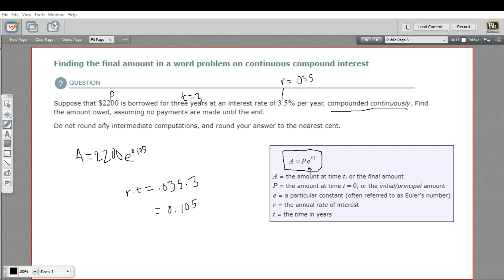So I've got 0.105 and I'll press the e to the x button. We'll take e to the 0.105 power. So that's that chunk, and then we multiply that by 2200.